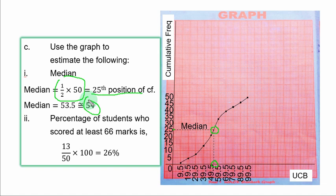Part ii: Percentage of students who scored at least 66 marks. Now if you go to the table and you count 66 and above, that means those who scored between 66 to 99, they are 13 in number.